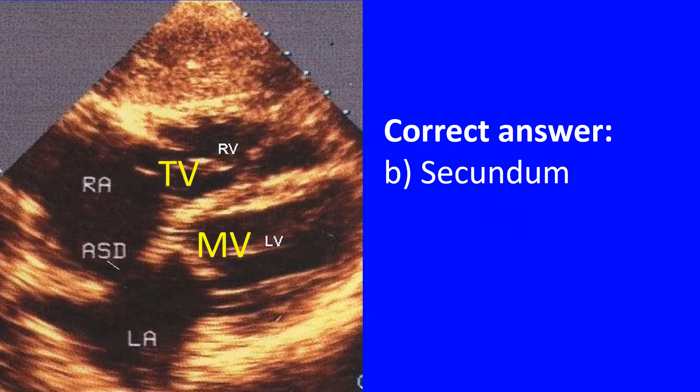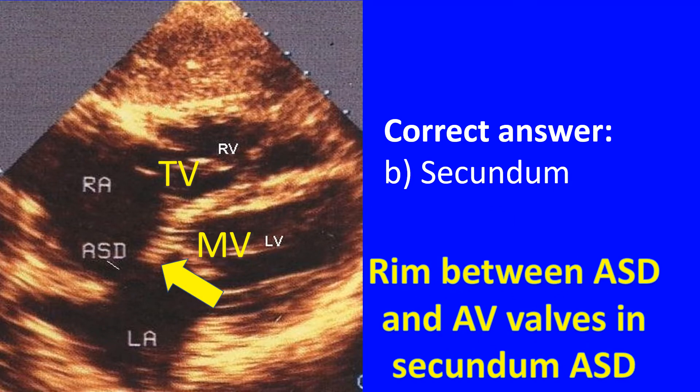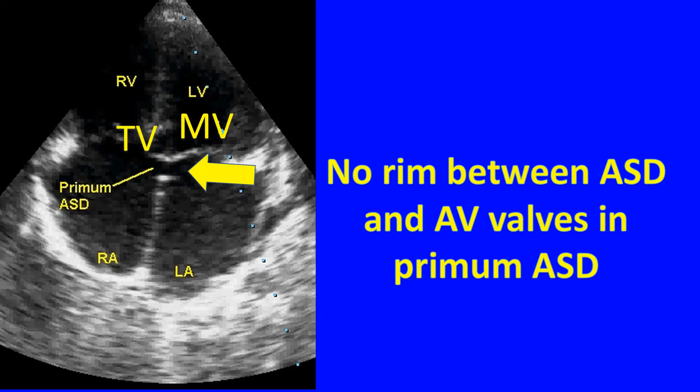Correct answer: B. Secundum. There is a good rim of septal tissue between the atrial septal defect and the atrioventricular walls, suggesting secundum ASD. The rim between the ASD and AV walls will be absent in ostium primum ASD, as seen in this image.